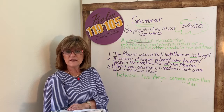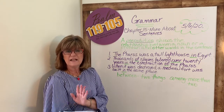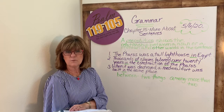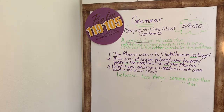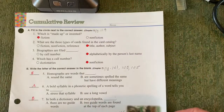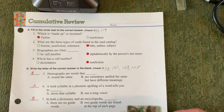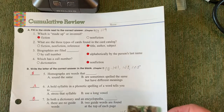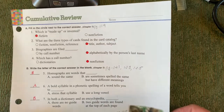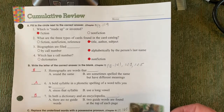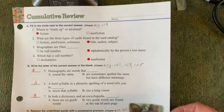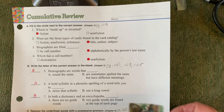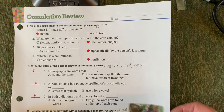Now we're going to check the cumulative review that you did last time, then go on with today's workbook pages. Let's take a look at the chapter 13 cumulative review, workbook pages 249 and 250. Part A, fill in the circle next to the correct answer: number one was fiction; two, title, author, subject; three, alphabetically by the person's last name; and four, nonfiction.